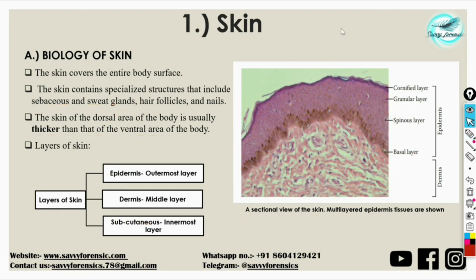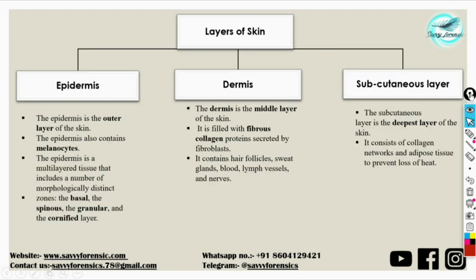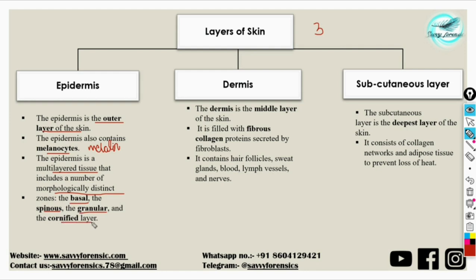The skin contains three layers. The upper or outer layer is the epidermis or epidermal layer. It usually contains melanocytes, which are the cells that contain melanin pigment. Melanin is the basic pigment responsible for causing skin pigmentation. The epidermis is a multi-layer tissue that contains morphologically distinct zones like the basal, spinous, granular and cornified layers.